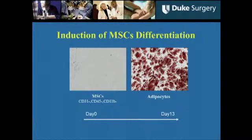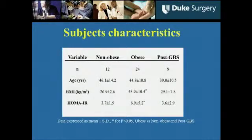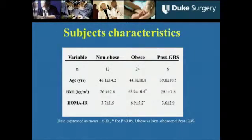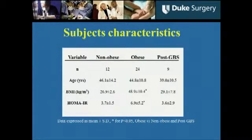We induced mesenchymal stem cells to differentiate into adipocytes. This is Oil Red O staining for the lipid droplets — this is the stem cell and this is the adipocyte. From the subject characteristics, BMI significantly decreased and insulin sensitivity improved after gastric bypass surgery.